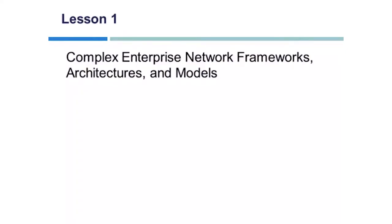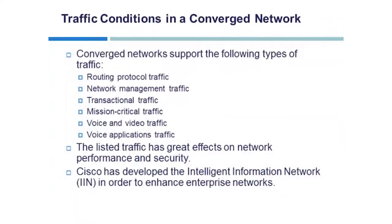Lesson 1: Complex Enterprise Network Frameworks. Traffic conditions in a converged network. Converged networks consist of various types of traffic such as routing protocol traffic — data from whichever routing protocols are running on the network, such as RIP, OSPF, EIGRP, ISIS, and BGP.